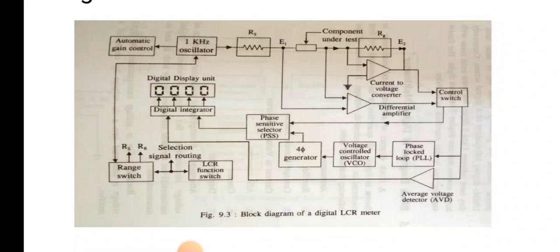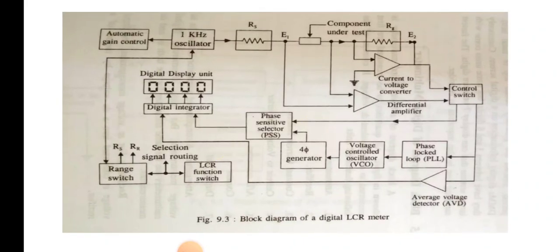Today we will discuss the block diagram of the digital LCR meter. The digital LCR meter is used for the measurement of components: L (inductor), C (capacitor), and R (resistor) — that is, inductance, capacitance, and resistance. The first step is selecting which component or parameter is to be measured.